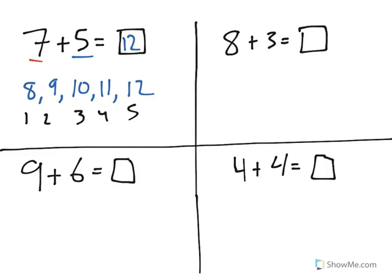Another strategy is working with the number 10. So for example 8 plus 3 over here. Well I know that 8 plus 2 is equal to 10 and I know that 3 is one more than 2, so that means that 8 plus 3 has to be one more than 8 plus 2 which would be a total of 11.